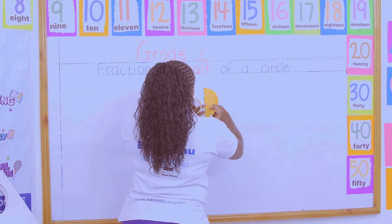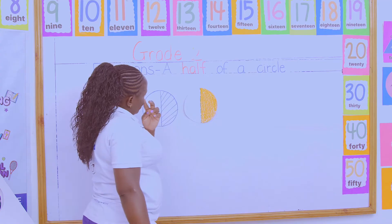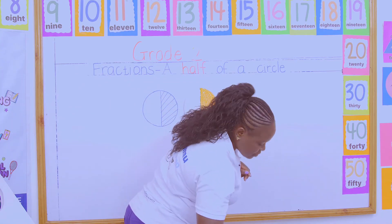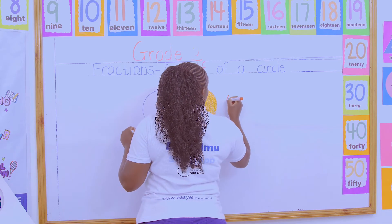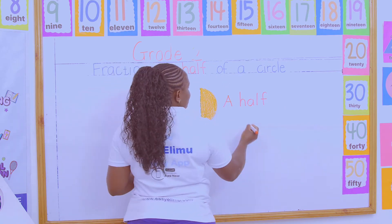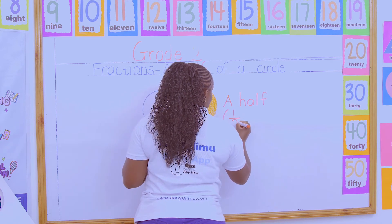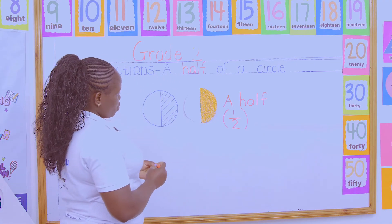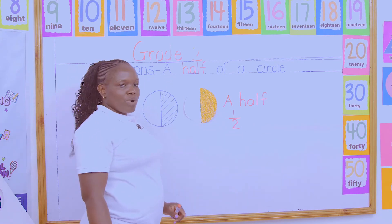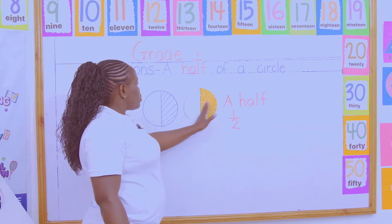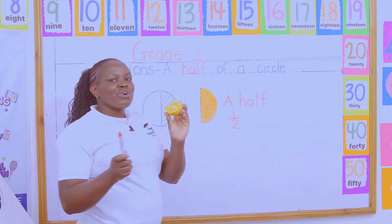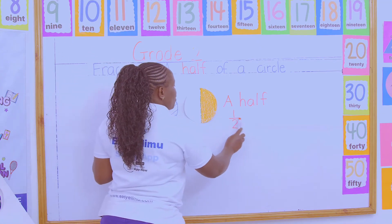Tell me something — how do we call the part that Janet is going to give the brother, or the part that Janet is going to remain with? This part is called a half. And in symbols, because math is made of words and symbols, it is one over two. In symbols, a half is one out of two. What does one out of two mean? These are two equal parts, and if Janet took one part and gave the brother the other, Janet remained with only half of the two parts.